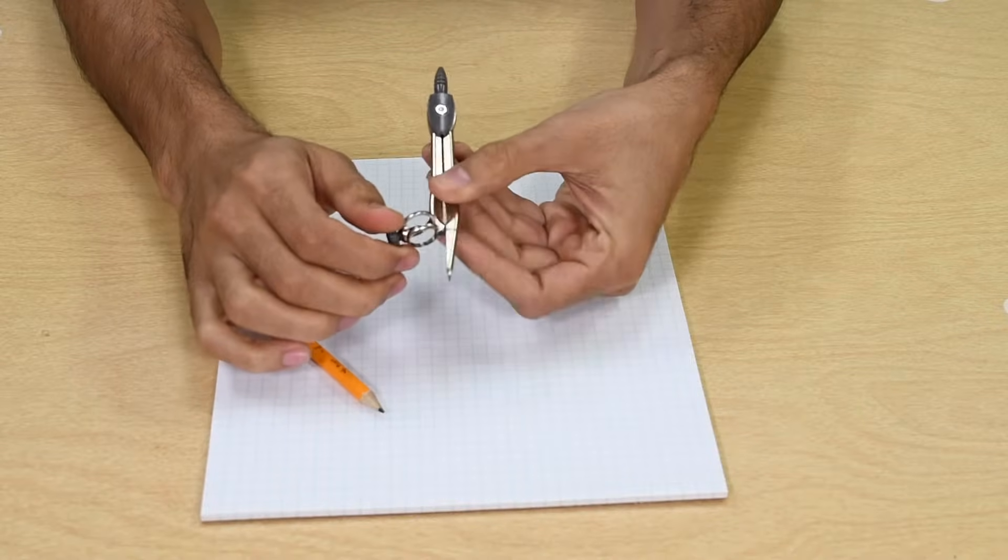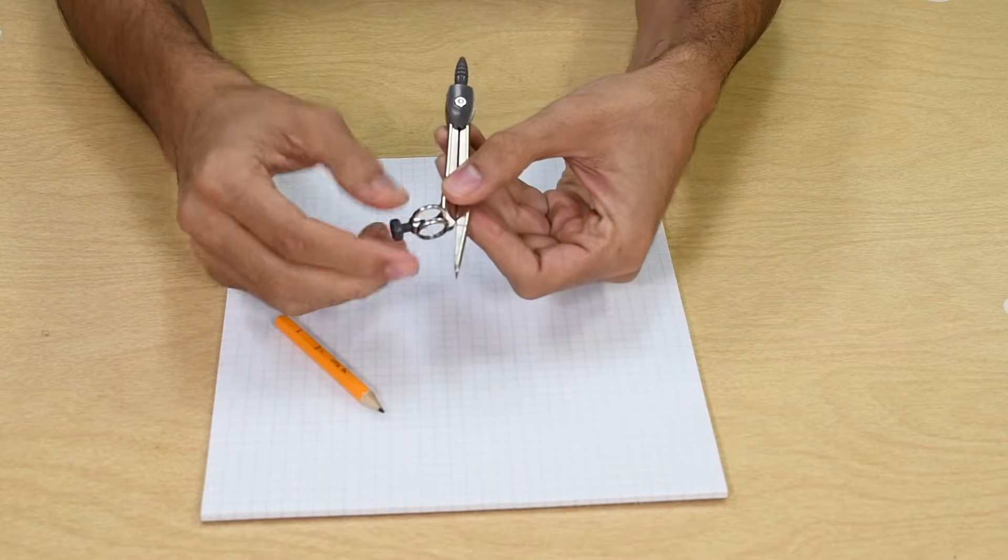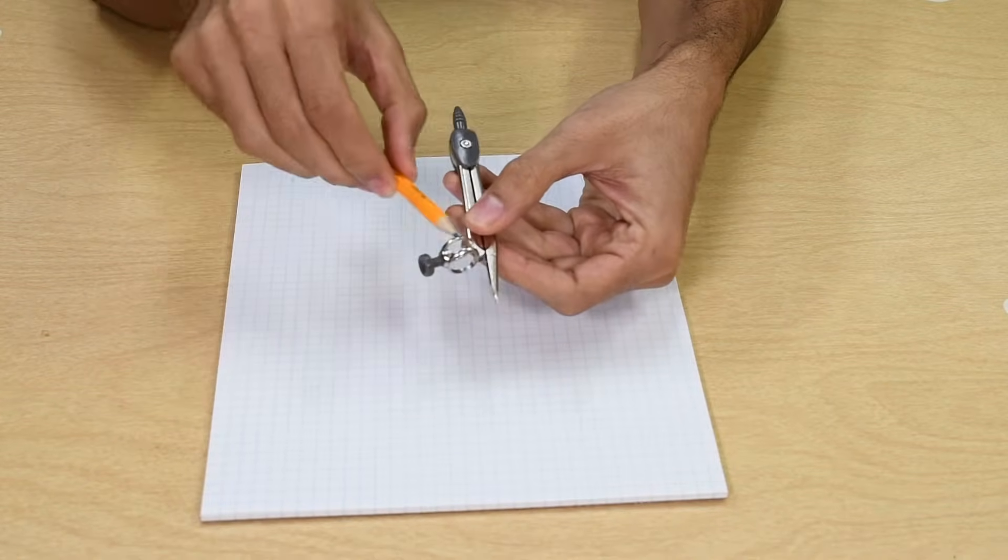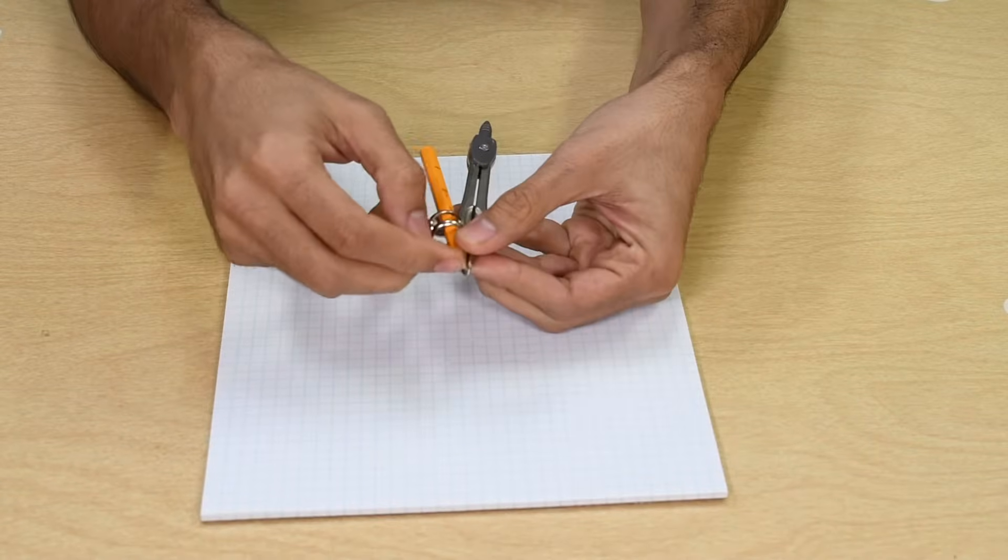To use a study compass, first unscrew the small screw on the side and place your writing device in the position. Try to align the tip of your pencil or pen with the tip of the needle on the other leg.